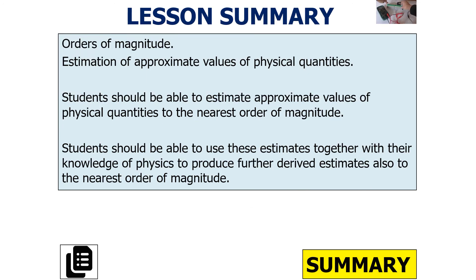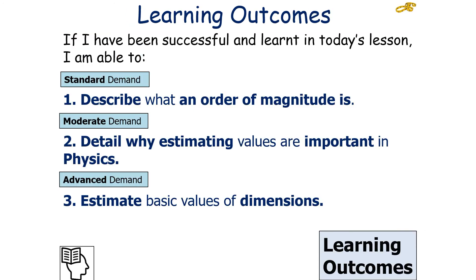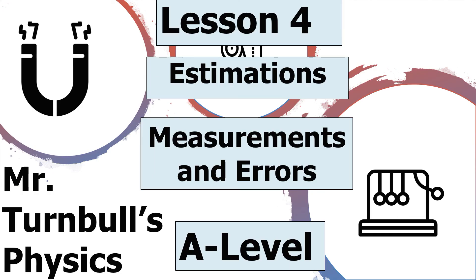So, what have we learned in today's lesson? You should be able to understand what orders of magnitude are and have an estimation of approximate values of physical quantities. You should be able to estimate approximate values of physical quantities to the nearest orders of magnitude. And you should be able to use these estimates together with your knowledge of physics to provide further derived estimates also to the nearest order of magnitude. If you've been successful and you've learned in today's lesson, you should be able to describe what an order of magnitude is, detail why estimating values are important in physics, and estimate basic values of dimensions. I hope you've enjoyed today's lesson looking at the estimations topic in measurements and errors in AQA A-level physics. Thank you and have a lovely day.